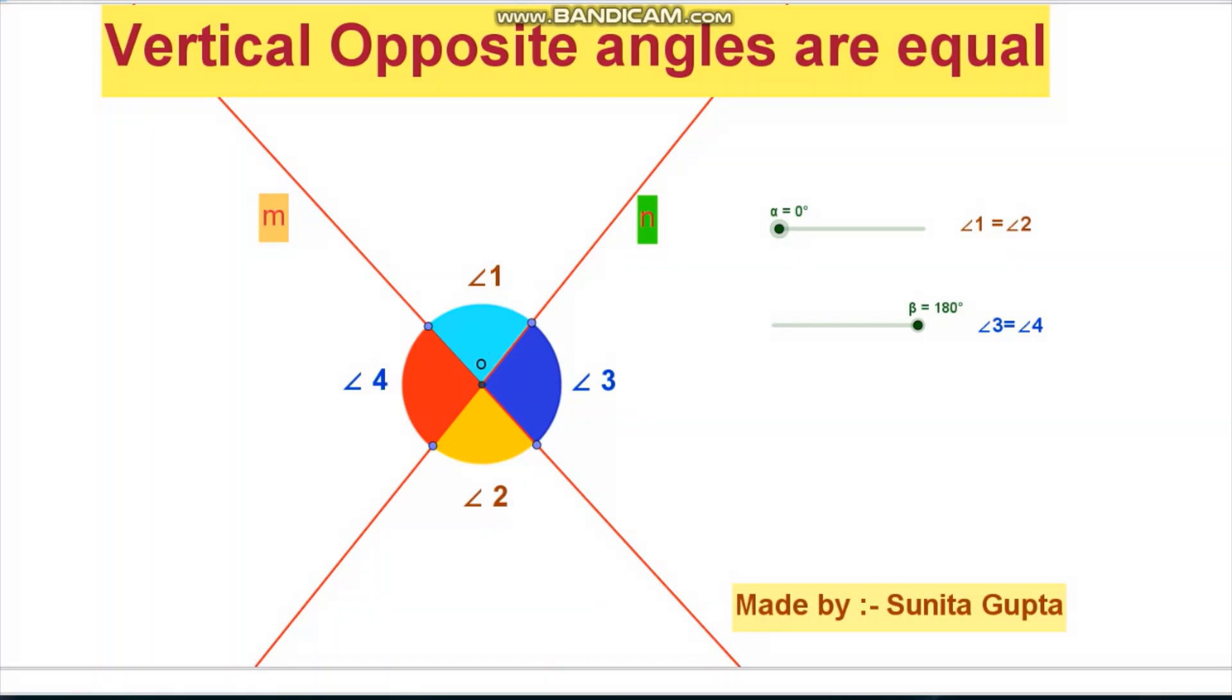The first pair of vertical opposite angles are angle 1 and angle 2. Angle 1 and angle 2 are equal, as shown on screen.